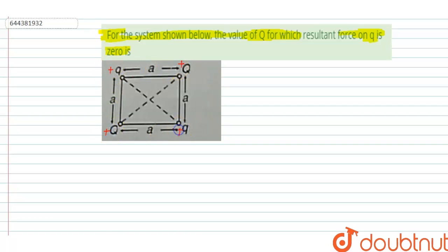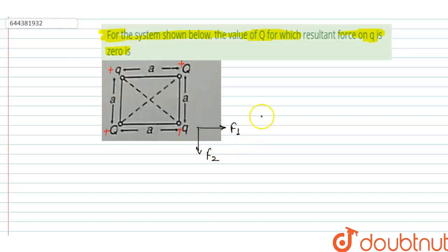Let us consider all charges having positive charge. The force on this charge particle due to this capital Q is in the direction of F1, and due to the other capital Q it is in the direction of F2.